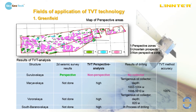Here is the table with the results of TVT analysis. For the Surilovskaya structure, the seismic survey was done and it showed a perspective zone, although the TVT analysis showed a non-perspective zone. As a result of drilling — no collector. All other wells have good oil production. So the accuracy of our method here is 100%.